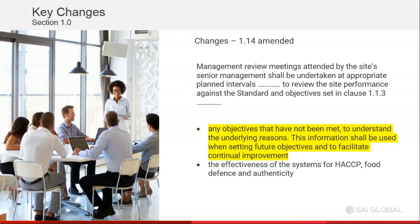Clause 1.1.4 is an amendment inserting into the management review the objectives that relate to food safety culture. It states that any objectives that haven't been met should have their underlying reasons understood. This information shall be used when setting future objectives and to facilitate continuous improvement. Basically there will be a continuous feedback from the measurement of objectives and tracking of these objectives back into the system so that the system can be improved on an ongoing basis.